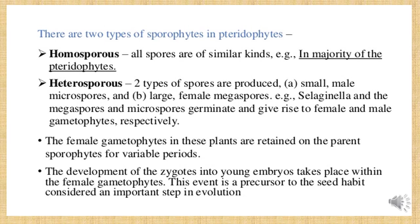In Selaginella, the megaspore and microspore germinate and give rise to the female and male gametophytes respectively. The female gametophytes are retained on the parent sporophyte for some period of time, developing above it. The development of the zygote into the embryo occurs inside the female gametophyte.